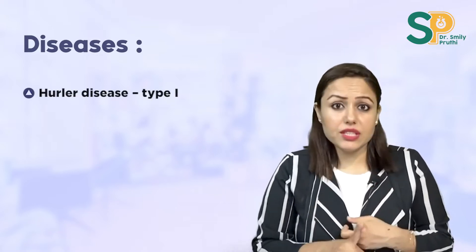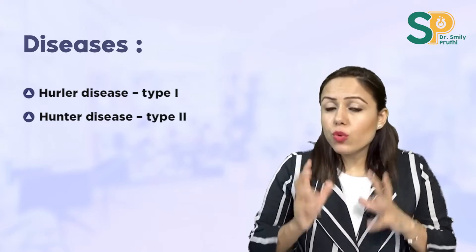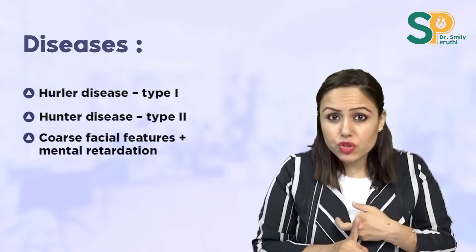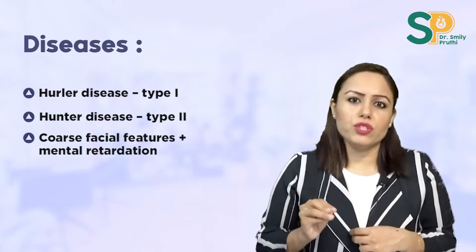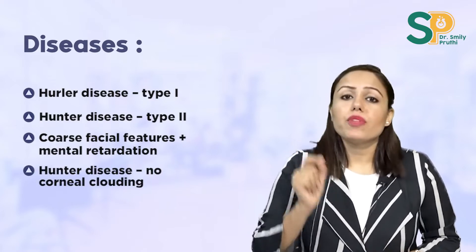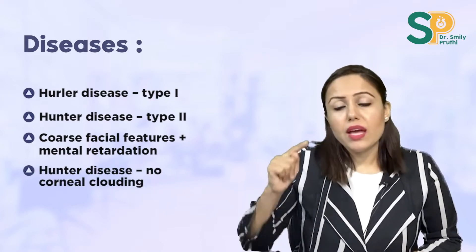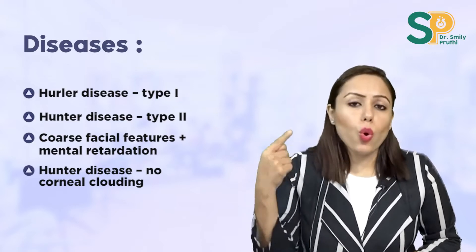First, mucopolysaccharidosis — examples: Hurler disease type 1, Hunter disease type 2. Whenever you see a question with coarse facial features and mental retardation, think of mucopolysaccharidosis. One important point about Hunter disease: there is no corneal clouding, whereas corneal clouding occurs in all other mucopolysaccharidoses.